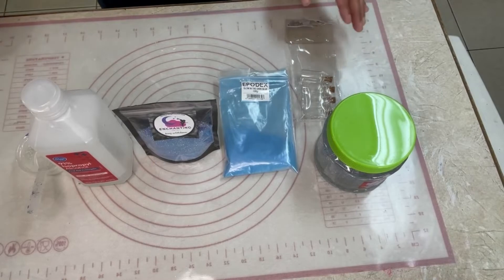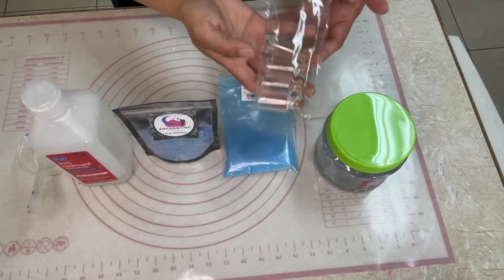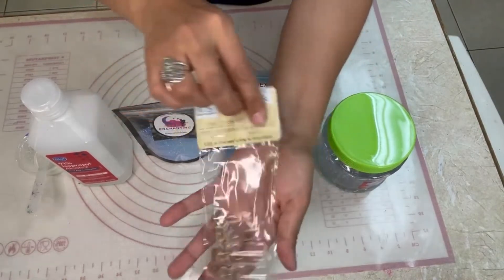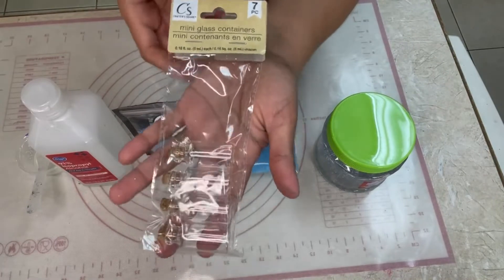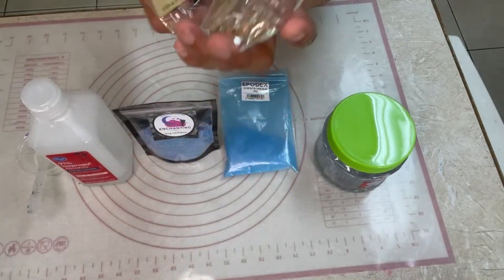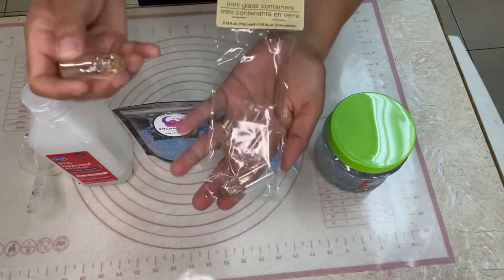So, these are the materials that we're going to be using. Now, these are some glass mini vials or mini glass containers that I found at the dollar store. They're super cute.